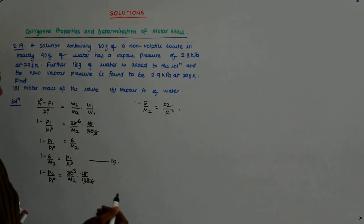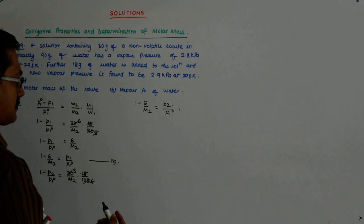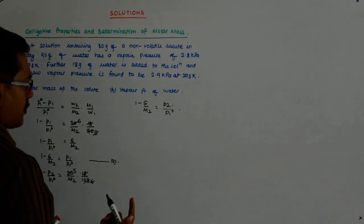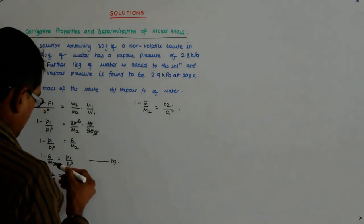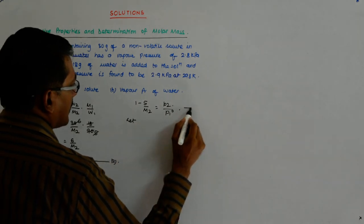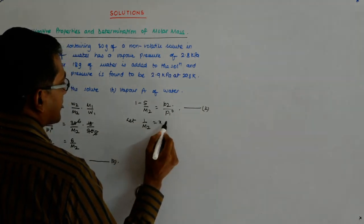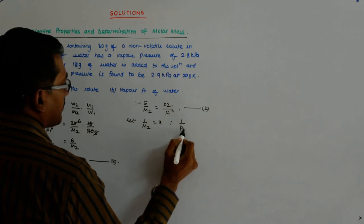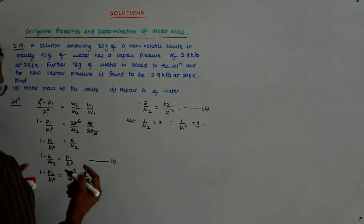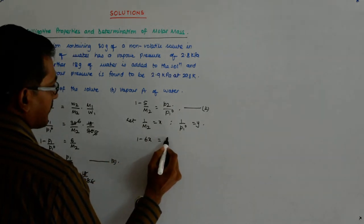So what happens? I have two equations, correct? I have two equations, and let 1 by M2 be X and 1 by P1_0 be Y. So this equation becomes 1 minus 6X.